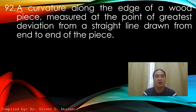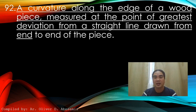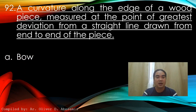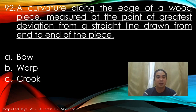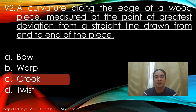Question 92: A curvature along the edge of a wood piece, measured at the point of greatest deviation from a straight line drawn from end to end of the piece. A) Bow, B) Warp, C) Crook, D) Twist. Answer: C) Crook.